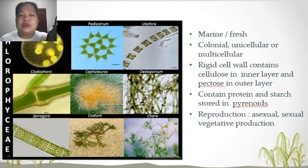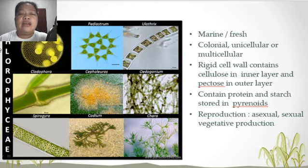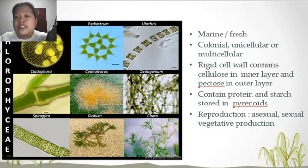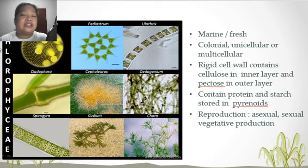Next, we have the Chlorophyta. Chlorophyta are marine or found in freshwater, and they can form colonial, filamentous, or unicellular forms. They have a rigid cell wall containing cellulose in the inner layer and pectin on the outer layer, with protein and starch stored in the pyrenoids. Reproduction could either be asexual, sexual, or vegetative.